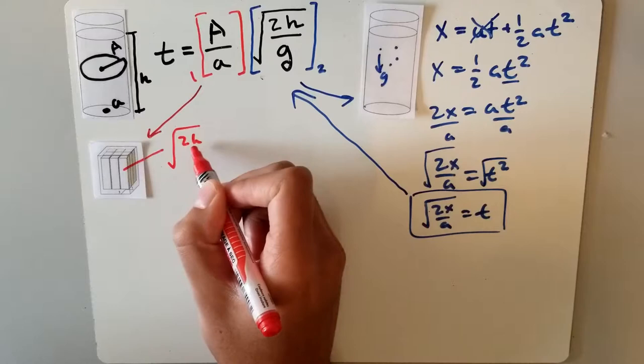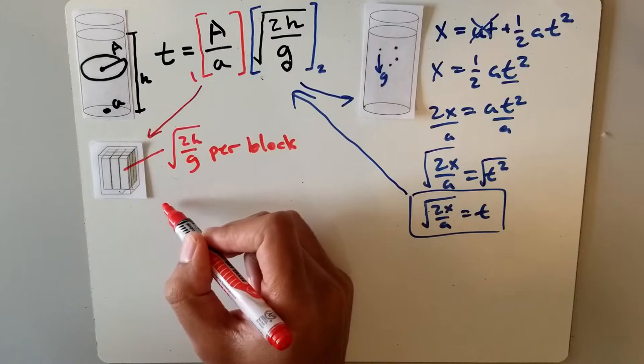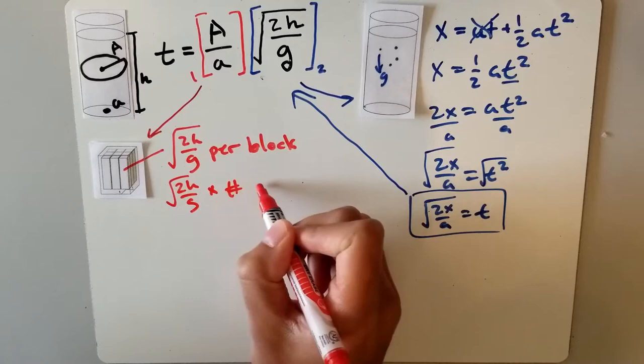Assuming that as soon as a block falls out of the container, the next one will immediately start falling, this gives us root 2h over g multiplied by number of blocks.